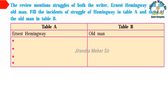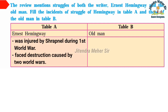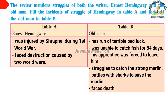Sixth: The review mentions struggles of both Ernest Hemingway and the old man. Table A — Ernest Hemingway's struggles: he was injured by shrapnel during the First World War; he faced destruction caused by two world wars. Table B — the old man's struggles: he had a run of terrible bad luck and was unable to catch fish for 84 days; his apprentice was forced to leave him; he struggled to catch the strong marlin; he battled sharks to save the marlin; and finally he faced death.